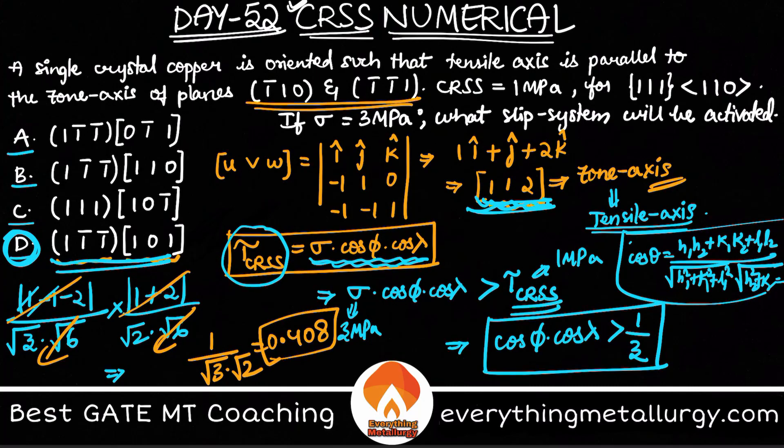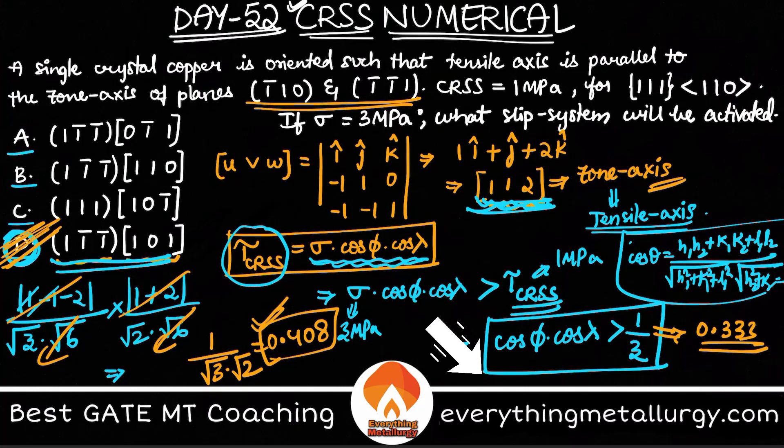D is the answer, simply because 1 by 3 is 0.333, and the fourth option gives cos λ into cos φ as 0.408. So I can straight away mark my option as D. Simple as that.